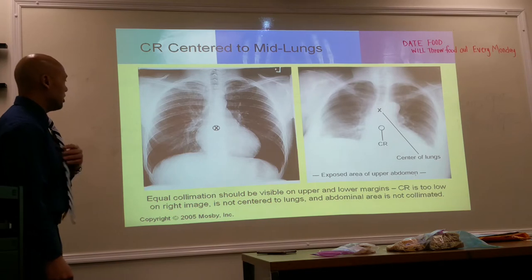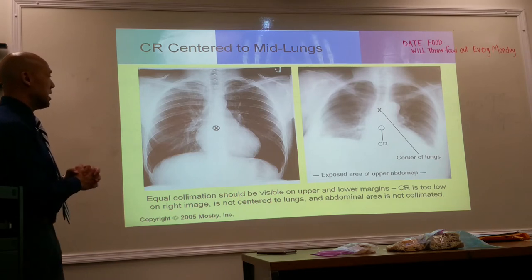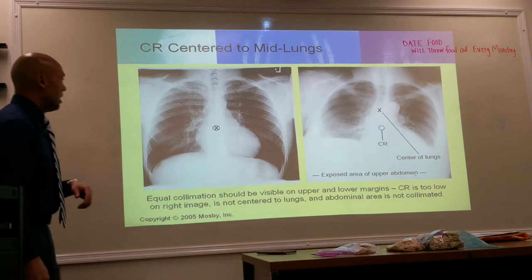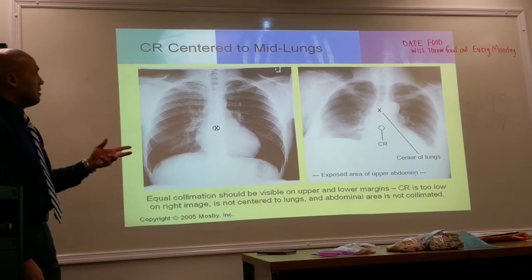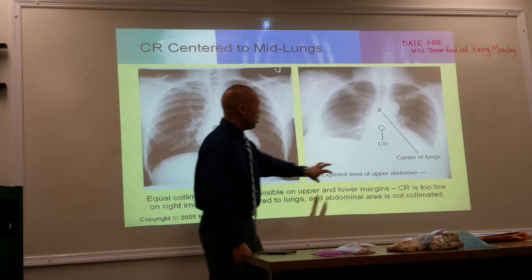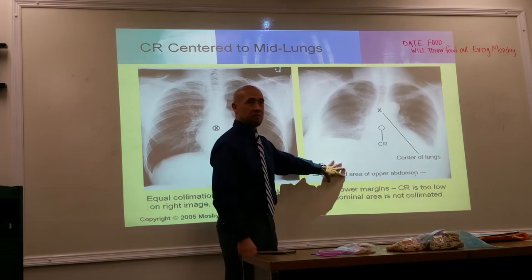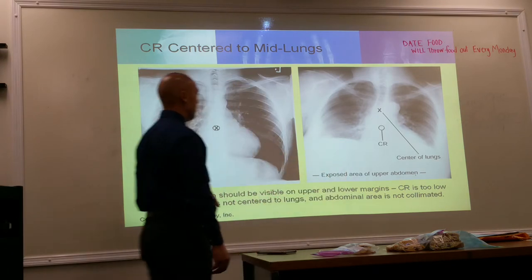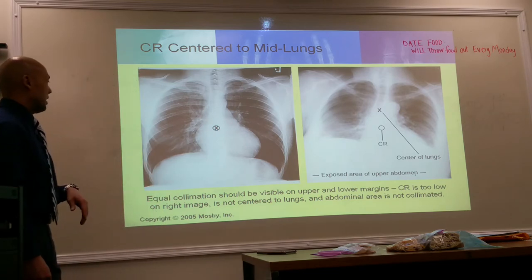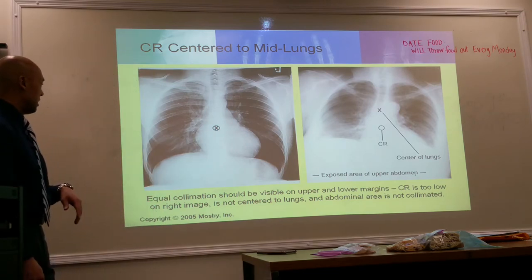Equal collimation should be visible on the upper and lower margins. If the central ray is too low, you're getting too much abdomen in the image. It needs to be centered higher so that it's properly centered to the lungs.